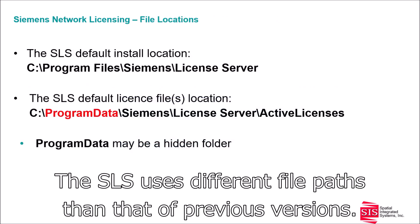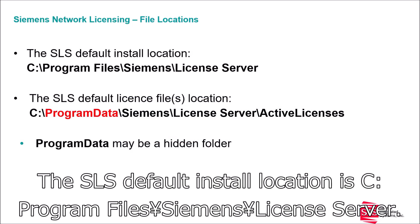SLIM uses different file paths than previous versions. The SLIM default install location is C:\Program Files\Siemens\License Server.